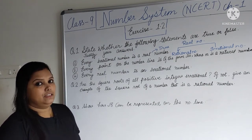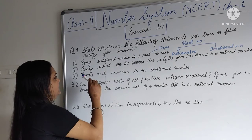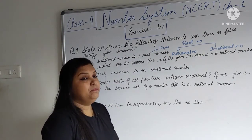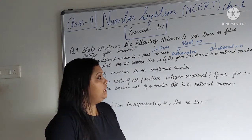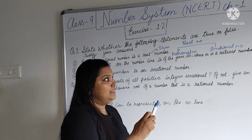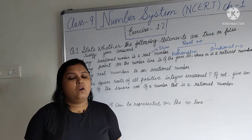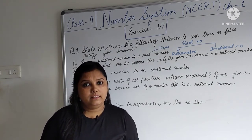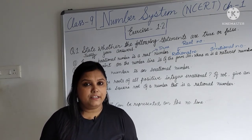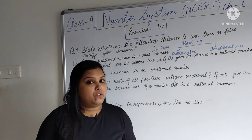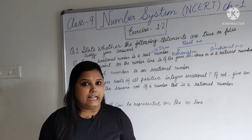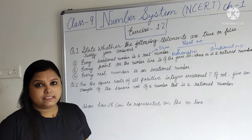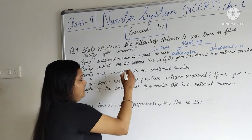Now the next one: every point on the number line is of the form √M, where M is a natural number. On the number line, negative integers are also there — there are negative numbers. We cannot express these negative numbers as square roots, so this statement is FALSE.